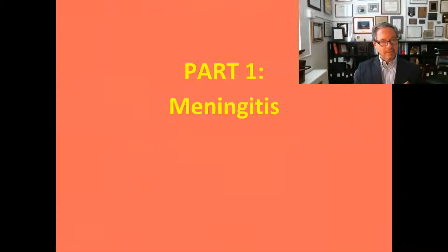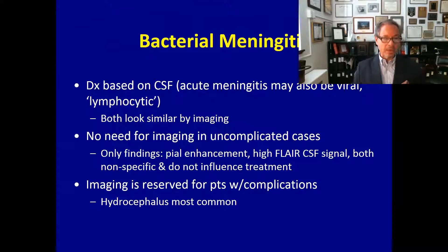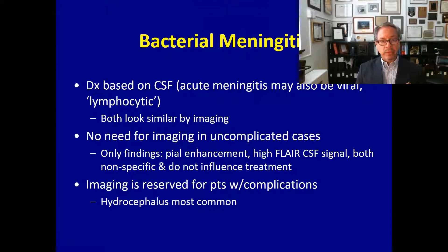Meningitis can be of two types: bacterial or viral. A diagnosis of bacterial or viral meningitis is a clinical diagnosis based on patient symptoms and laboratory findings, including analysis of CSF. Both can look basically identical by imaging, so in cases of uncomplicated meningitis the imaging findings are going to be very nonspecific.